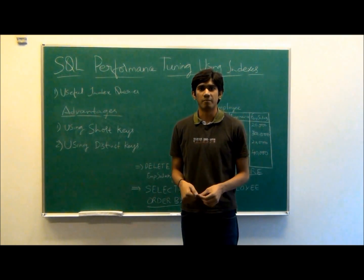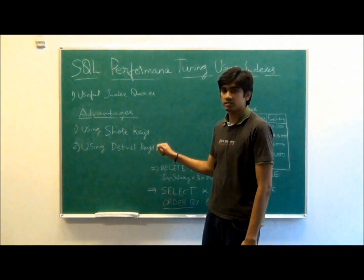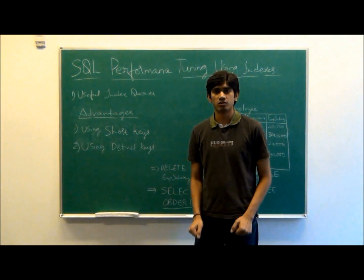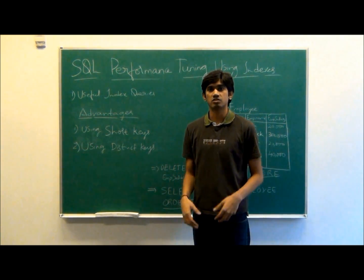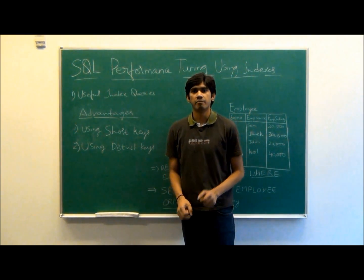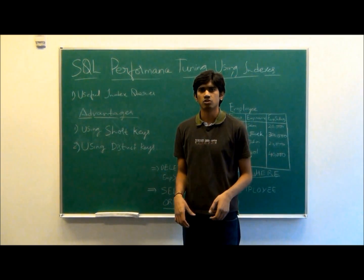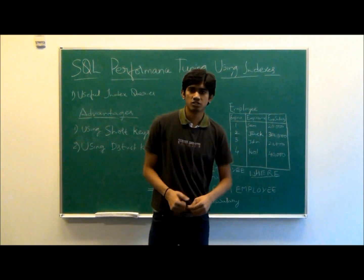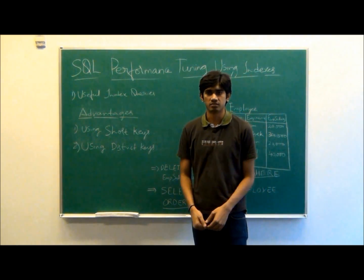A single integer column makes the absolute best index. The second advantage is using distinct keys. An index with a high percentage of unique values is a selective index. An unique index is highly selective since there are no duplicate entries. Many databases will track statistics about each index so they know how selective each index is. This is what SQL performance tuning using indexes is about. Thank you.